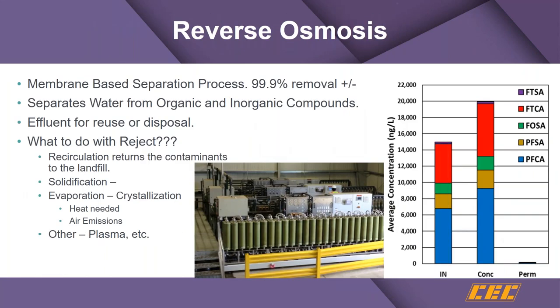Reverse osmosis is a very well-used technology for contaminated groundwater, and we're using it at a number of landfill leachate sites we're designing. This is a membrane separation device that removes virtually all long and short chain PFAS constituents as well as VOCs and other contaminants. Typically 80 to 90% of the water comes out as permeate, with somewhere between 10 to 20% as a reject that would have to be managed.